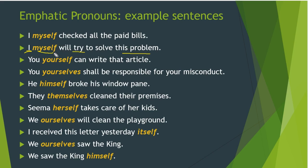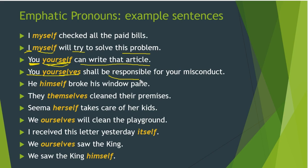Next: 'You yourself shall be responsible for your misconduct' — here 'yourself' tells us 'you' refers to a singular person. In the next sentence, 'you yourselves shall be responsible for your misconduct' — 'yourselves' tells us 'you' refers to more than one person. Here, the verb is 'shall be responsible', and 'yourselves' emphasizes 'you'.